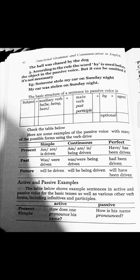For example: 'Someone stole my car on Sunday night' — active. In passive: 'My car was stolen on Sunday night.' The passive voice uses Be + V3, and the agent 'someone' is omitted because it is not necessary.